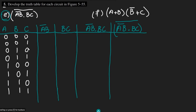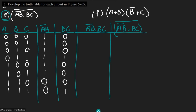For AB complement: 0·1=0 so complement is 1, 0·1=0 so complement is 1, 0·1=0 so complement is 1, and 1·1=1 so complement is 1; then 1·0=0, 1·0=0, 1·0=0 complemented is 0, and 0 as well. For BC: if any one of them is 0 the output is 0, giving 0 0 0 0, then both are 1 giving 1, then 0 0 0, and 1.